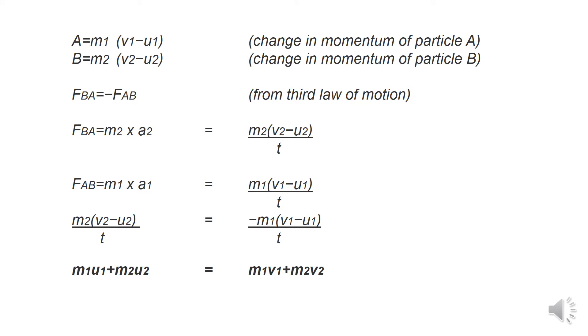So, going to the third law of motion, we have FBA equals minus FAB, or FBA would be M2 times A2 which equals M2 V2 minus U2 upon T, and FAB equals M1 V1 which equals M1 V1 minus U1 over T.